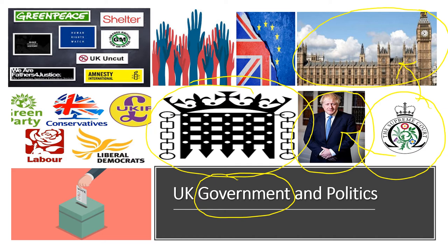Moving on to the politics side of the course — politics is about the distribution of power in a society: who gets what, when, and how. While government decides those questions, politics is about how we decide who is in government and how pressure is brought to bear on government to change decisions. The most basic way people interact with politics is they vote, so we will look at voting behaviour — how and why different groups of people tend to vote the way they do. Voting behaviour has become a lot more complex and volatile over the years.